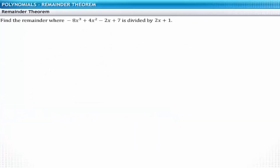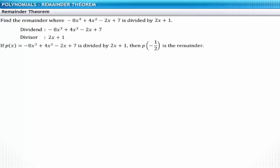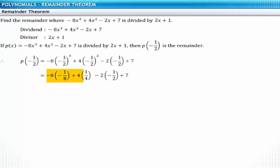Consider another problem where the linear polynomial 2x plus 1 divides minus 8x cubed plus 4x squared minus 2x plus 7. The divisor is 2x plus 1, of the form ax plus b. According to the guidelines, the remainder is p of minus b divided by a, so the remainder is p of minus one half. Replacing x with minus one half in the polynomial, the remainder is equal to 10.